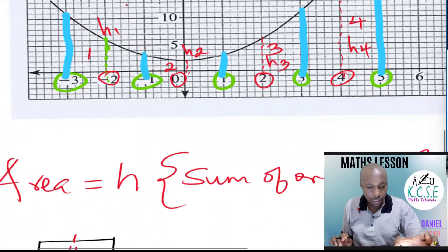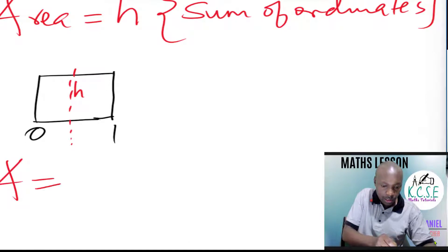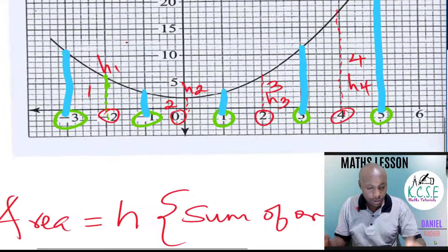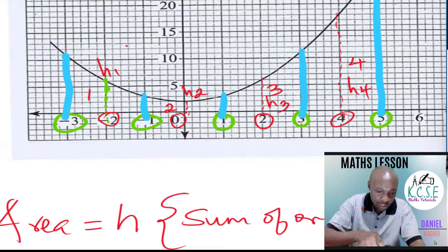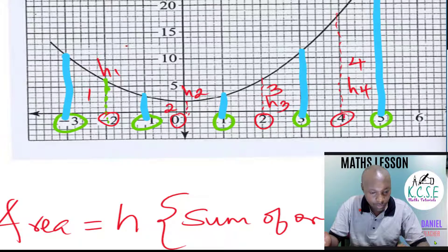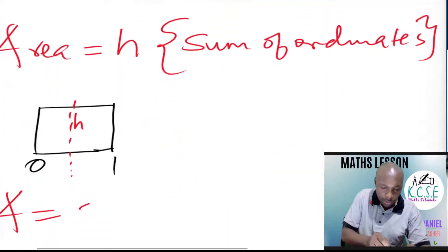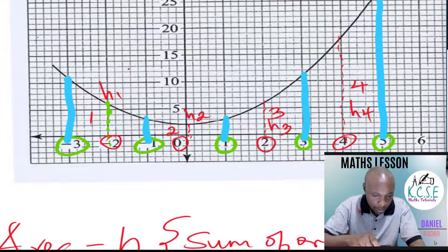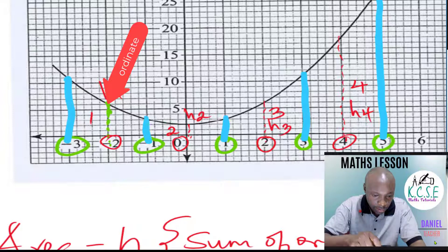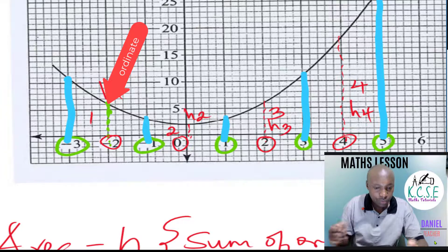Now we apply the formula: area under the curve equals height of one strip multiplied by the sum of the ordinates. One strip goes from negative three to negative one, so the height is two. The first ordinate is at x equals negative two — reading up to where that line touches the curve, with the scale one centimeter representing five, that height is six.